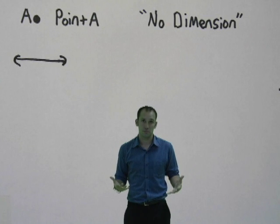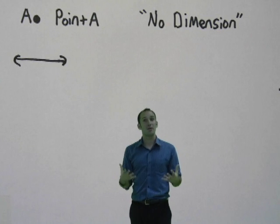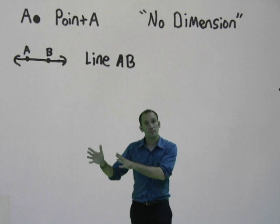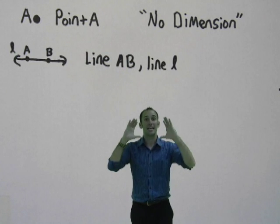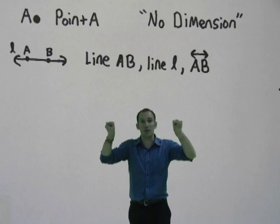The line goes on and on forever. Don't forget that we can label it line a, b, or I can just say line l. Or I can put a, b, and make sure I put the notation on top.